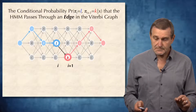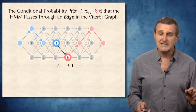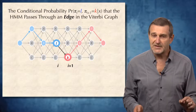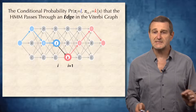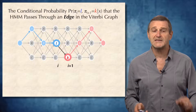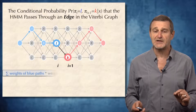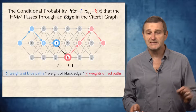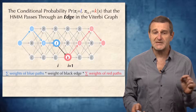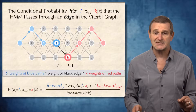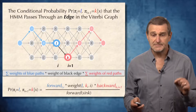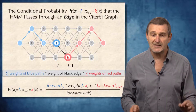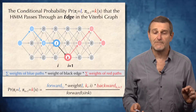After computing the values forward_k(i) and backward_k(i), we ask a slightly different question: what is the conditional probability that π(i)=l and π(i+1)=k, given that the emitted string is x? In other words, what is the probability that the HMM passes through a particular edge in the Viterbi graph? This probability equals the sum of weights of all blue subpaths multiplied by the weight of the edge, multiplied by the sum of all red subpaths — giving: forward_l(i) × weight(edge Lk,i) × backward_k(i+1) / forward(sink).